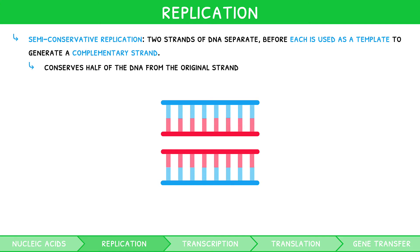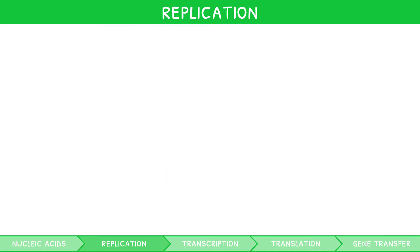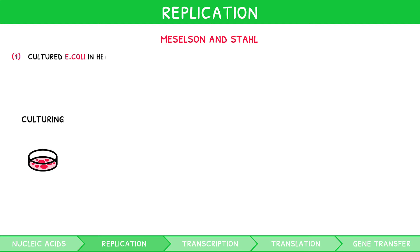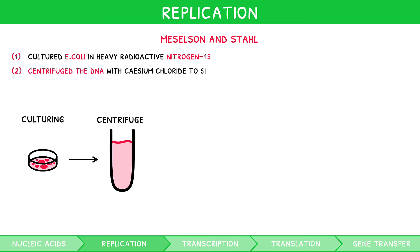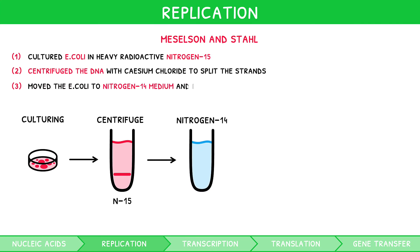But how is this process confirmed? This was thanks to the work of Meselson and Stahl. They began by culturing E. coli in heavy radioactive nitrogen-15. They then centrifuged the DNA with caesium chloride to split the strands apart. They observed a single band representing DNA only containing nitrogen-15 at the bottom of the test tube. They then moved the E. coli to a lighter nitrogen-14 medium and repeated the same stages. Here, they observed a new band above the previous nitrogen-15 containing DNA, representing DNA containing both nitrogen-14 and nitrogen-15.